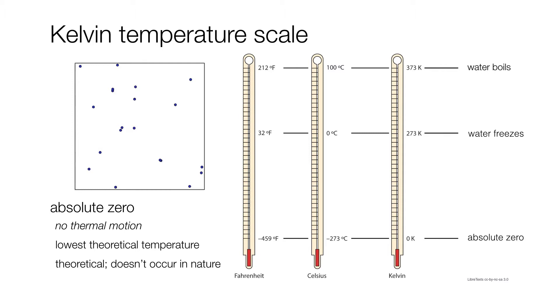However, in reality, even nature itself doesn't exactly reside at zero Kelvin. Empty space, devoid of all the planets, devoid of all the stars, devoid of everything, will still have a characteristic background temperature of about 2.73 Kelvin. But this is our scale of choice in astronomy.